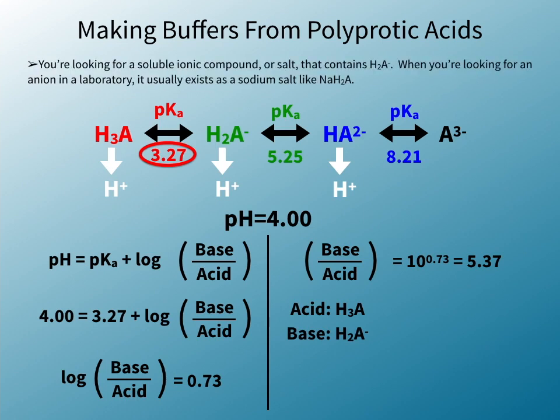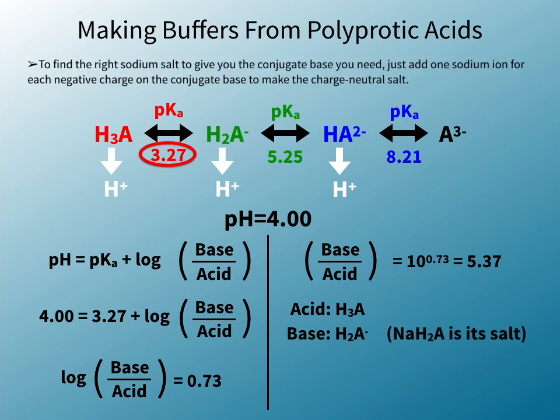You won't just find a bottle of ions in the laboratory, though. You're looking for a soluble ionic compound, or salt, that contains H2A⁻. When you're looking for an anion in a laboratory, it usually exists as a sodium salt, like sodium H2A. To find the right sodium salt, just add one sodium ion for each negative charge on the conjugate base to make the charge neutral salt.